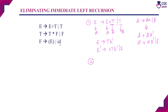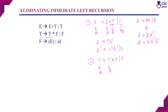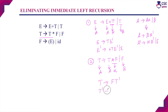Next we eliminate the left recursion in the second production. We again write the two-step production: A derives beta A-dash. Here A is T, so T derives beta which is F, giving T derives F T-dash. Then T-dash derives alpha which is star F, so T-dash derives star F T-dash or epsilon.